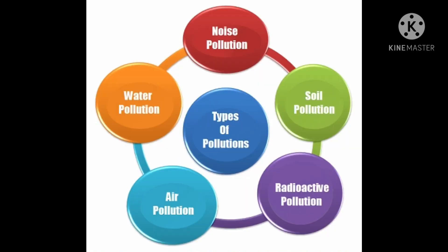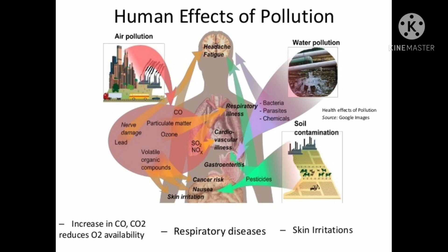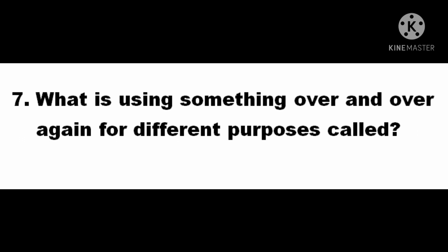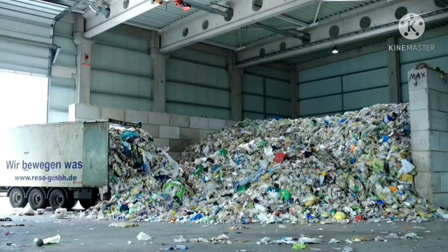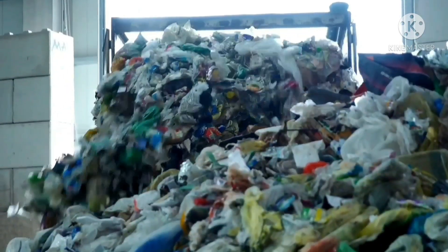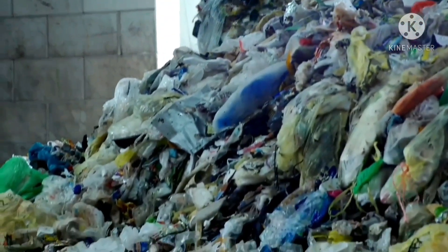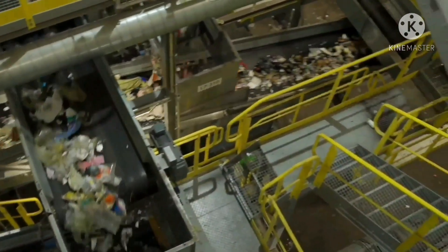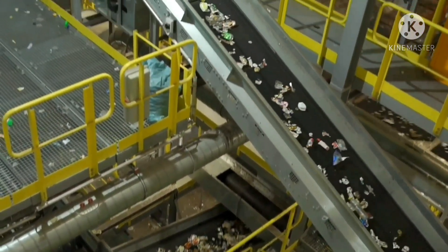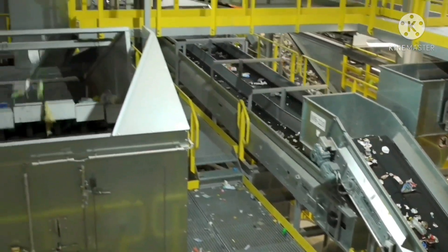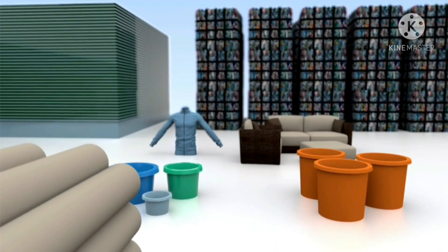Life can be harmed when exposed to these materials, and the effects of them on humans and plants are well known. Question 7. What is using something over and over again for different purposes called? The correct answer is recycling. Recycling is the process of converting waste materials into new materials and objects. The recovery of energy from waste materials is often included in this concept.